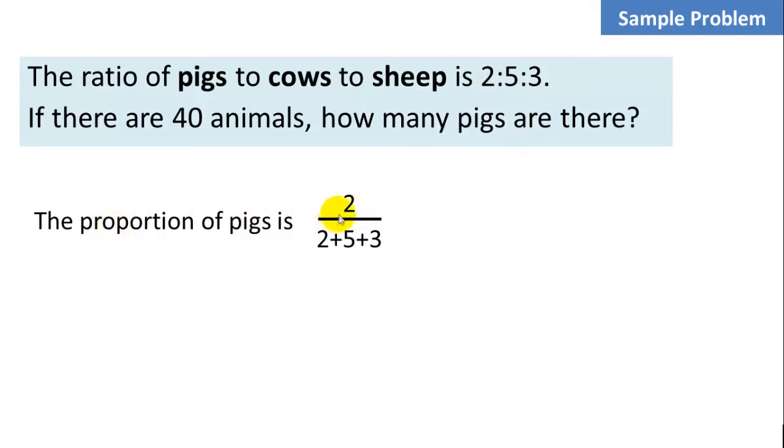This is called proportion. So when you have a part related to a part, you call that a ratio. When you call a part related to the whole, then we call that a proportion. So the proportion of all the animals that are pigs is 2 over 2 plus 5 plus 3. Because we can see that there are 2 pigs to 5 cows to 3 sheep. So if there's one set of 10 animals, 2 of them will be pigs. So the proportion of the total animals that are pigs is 2 over 10. That reduces to 1 fifth. And then we can simply multiply that by the total number of animals. So there are 40 animals given. 1 fifth of them are pigs. We can multiply this out, and we get 8 pigs total out of the 40 animals.